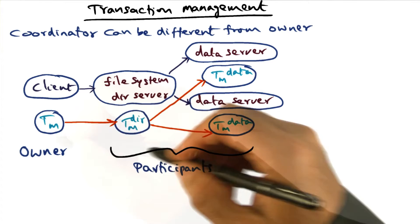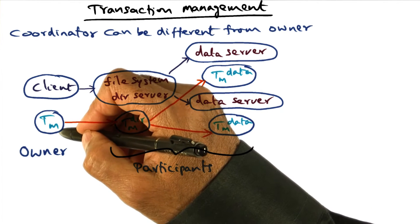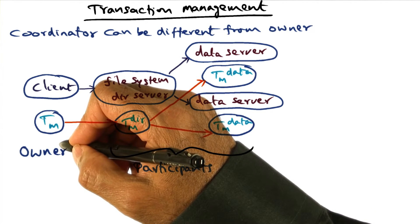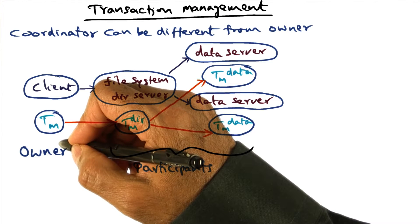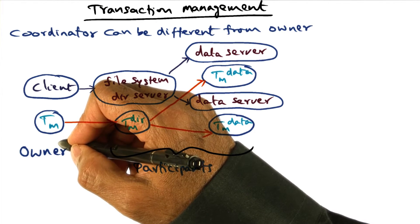I mentioned earlier that as the owner of a transaction tree, the owner has the right to delegate the ownership to someone else. Why would they want to do that?